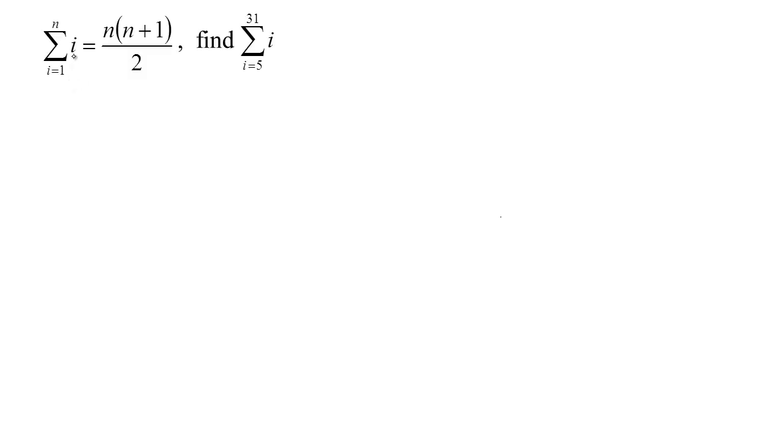Now, this formula that we just found for summing up the first n integers, notice that we have to start with 1. So if we're asked to sum up these integers from 5 to 31, we're not starting with 1, so we have to be a little bit tricky as we do this.